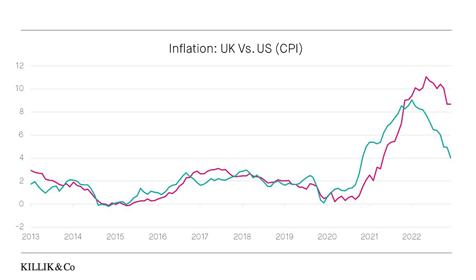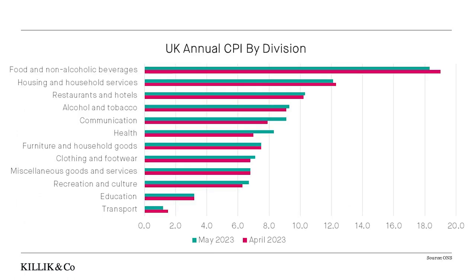This is partly because the UK was a bit slower to start putting interest rates up in order to get that inflation under control, but it's also because the UK is much less self-sufficient in terms of food and energy. We depend on imports, as you can see by that European trade chart that we showed in the first section, and these are more costly when the pound is weaker. We can also look at the breakdown of different categories within that CPI figure to see where exactly these price rises are coming from.